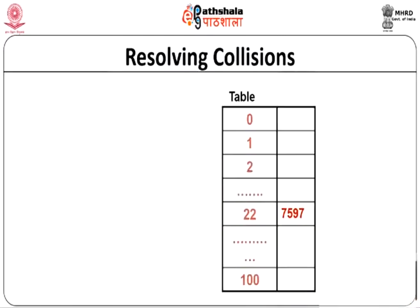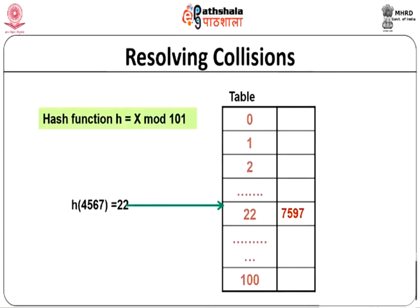Now let us go into the solving of collisions. Here we have a hash table of size 101 (indices 0 to 100), and into location or index 22, some key 7597 has been hashed using the simple hash function h(x) = x mod 101. Now we have another key 4567 also mapping to location 22, but table location 22 is already occupied — that is our collision problem.